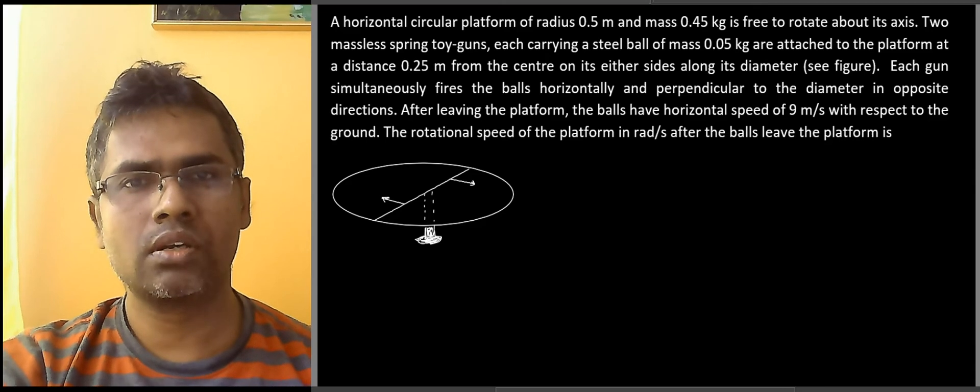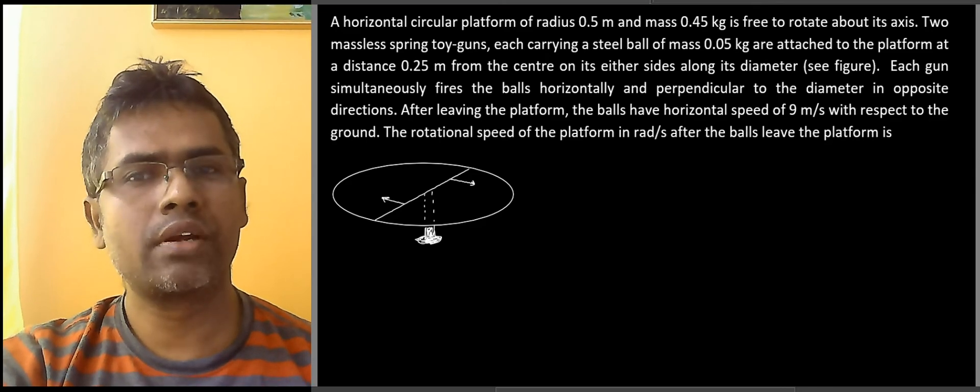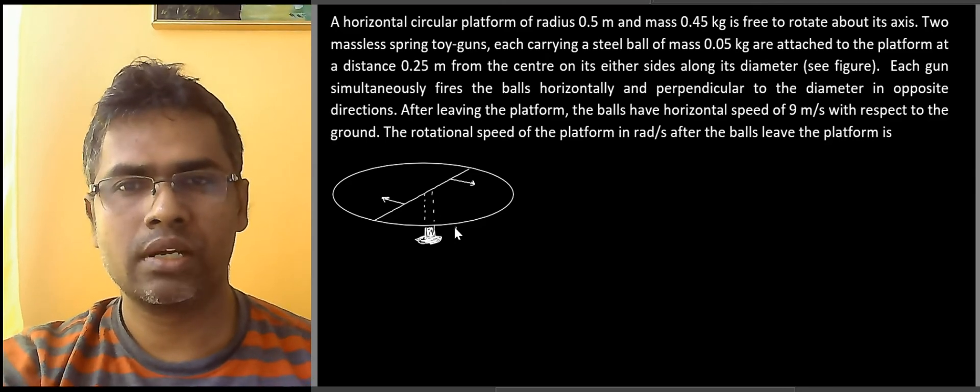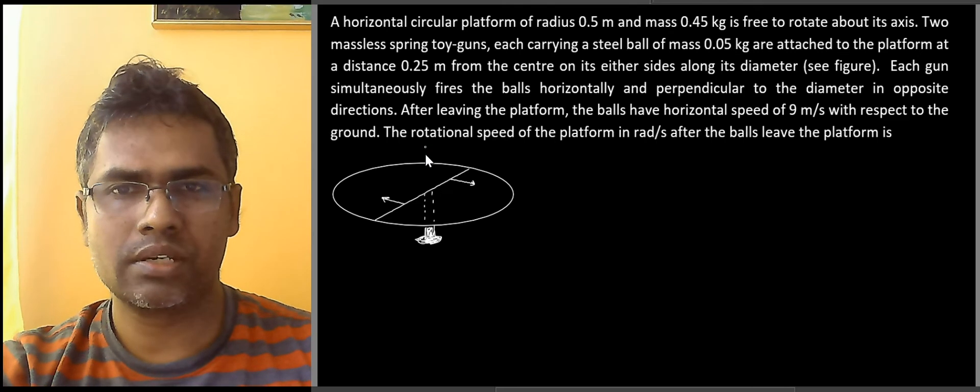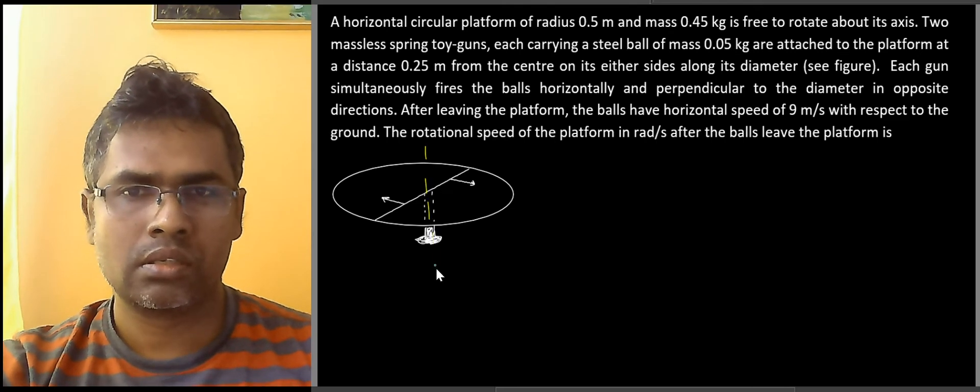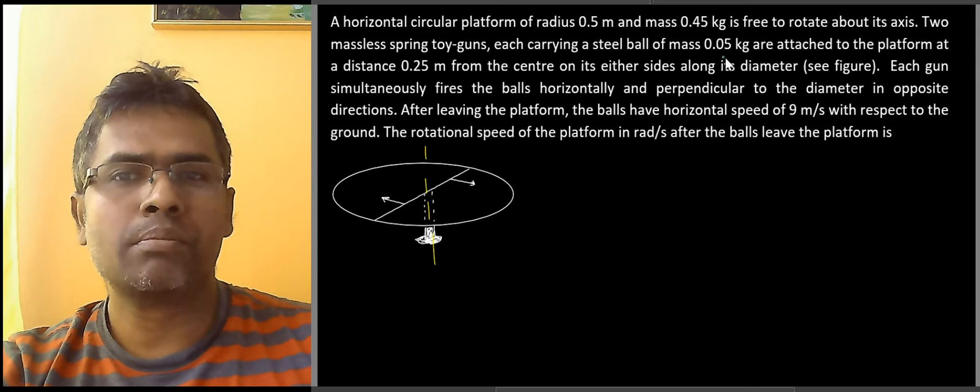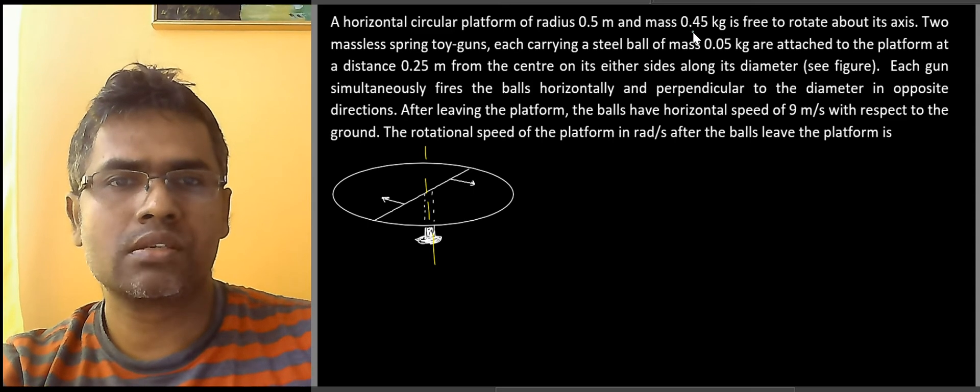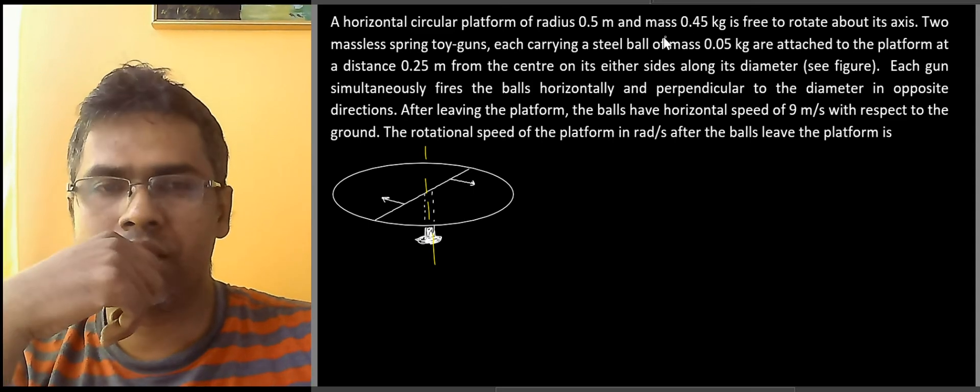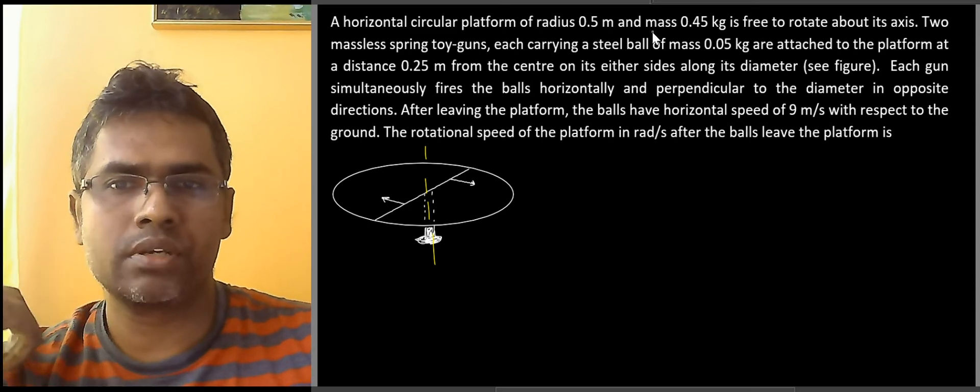A horizontal circular platform is free to rotate about a vertical axis passing through its center. This is the axis. The mass of the platform is given as 0.45 kg and radius 0.5 meters.